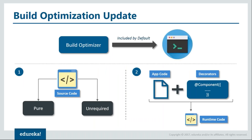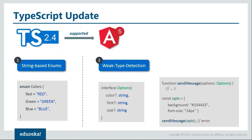Next is the build optimization update. The build optimizer is a tool included in Angular CLI that makes your bundle smaller using semantic understanding of your Angular application. It keeps the parts of your application that are needed and marks those as pure, improving the tree-shaking process to remove extra parts from the build. It also removes Angular decorators from your runtime code, since decorators are used by the compiler and aren't required at runtime. All of this decreases the size of your JavaScript bundles and lets your application boot up faster.